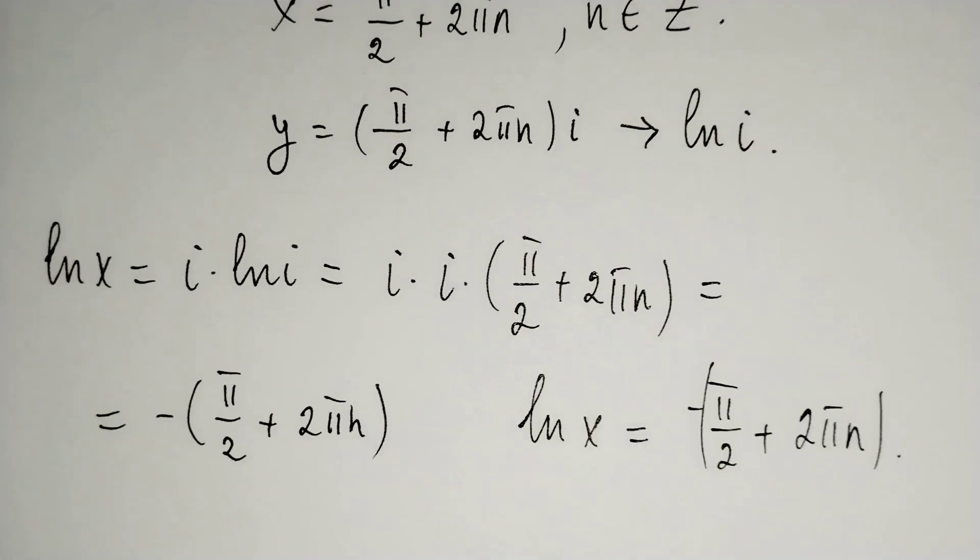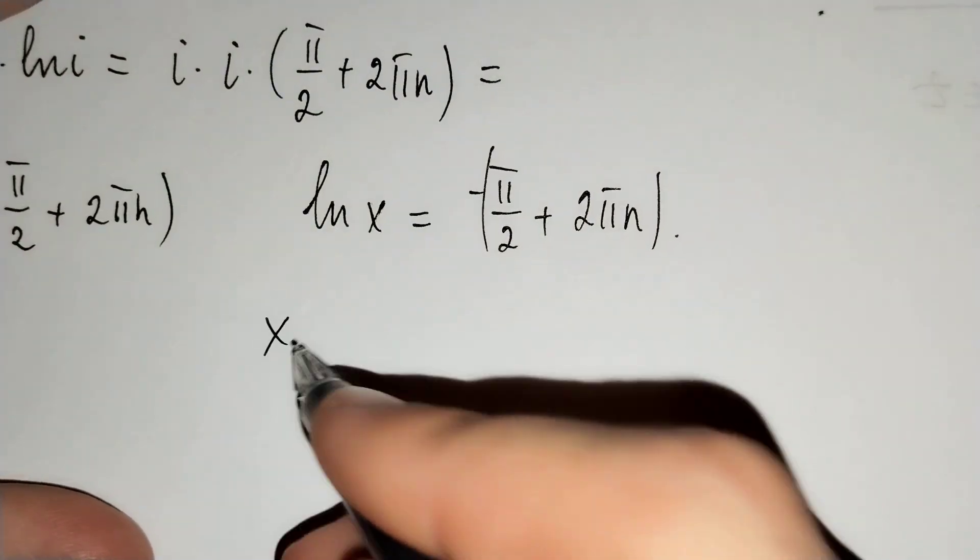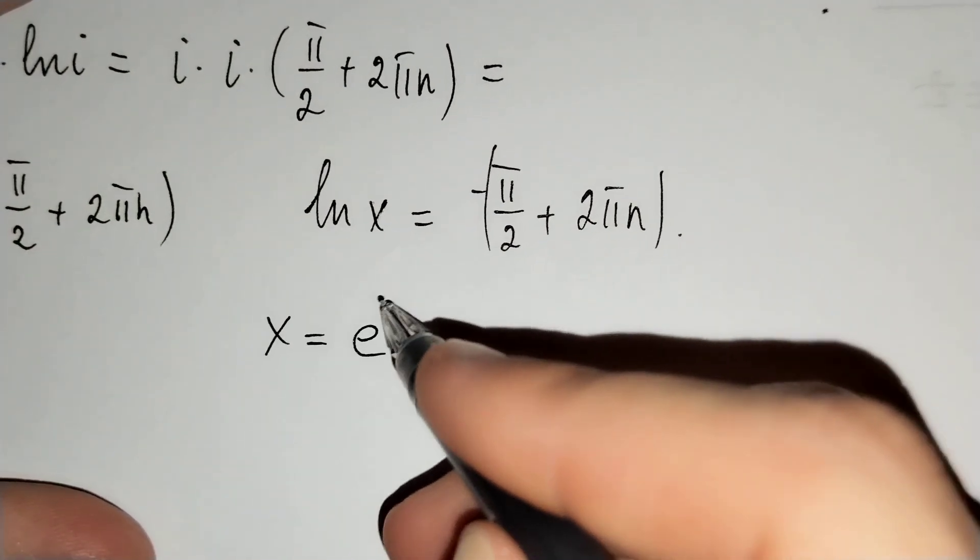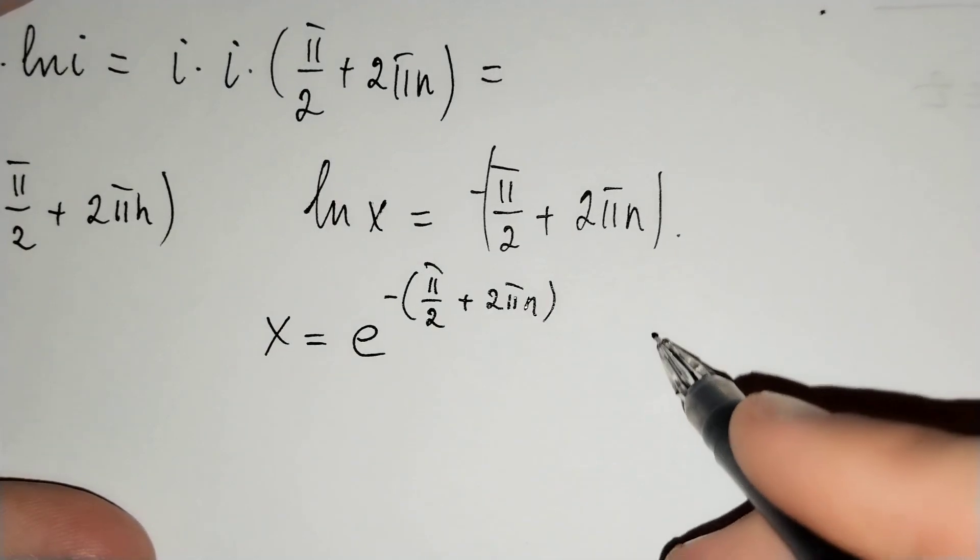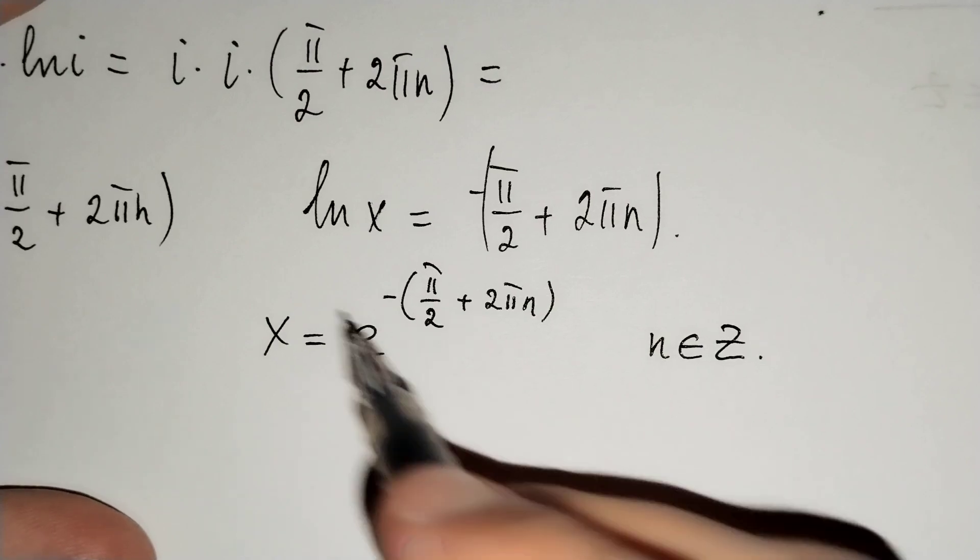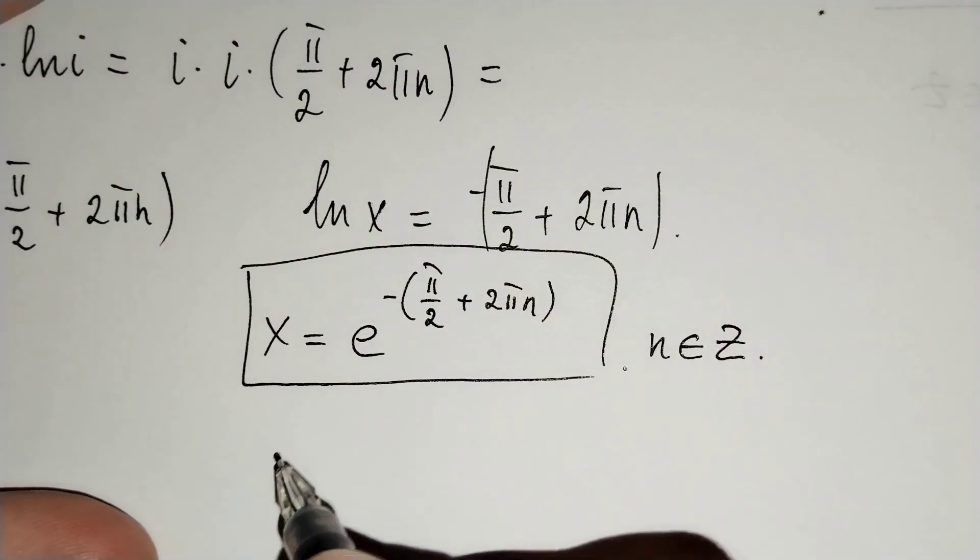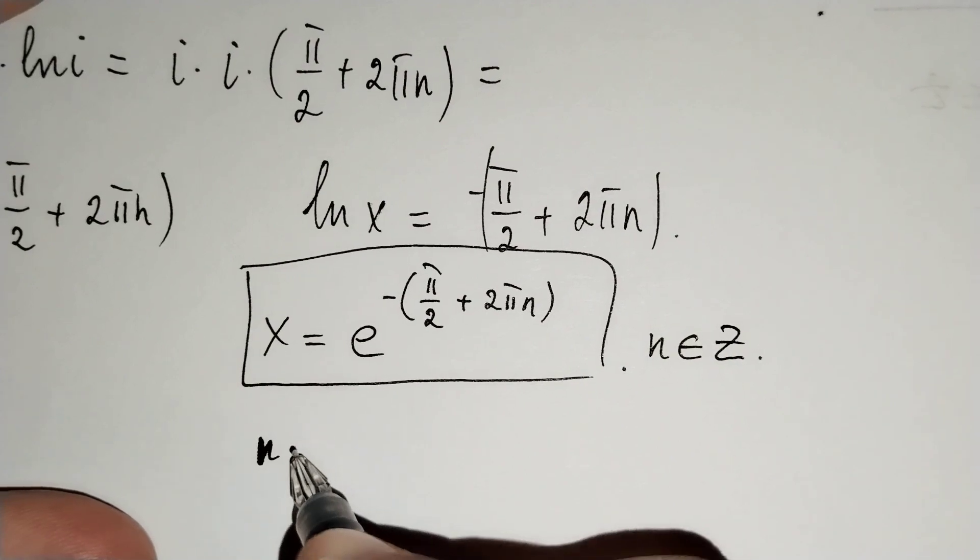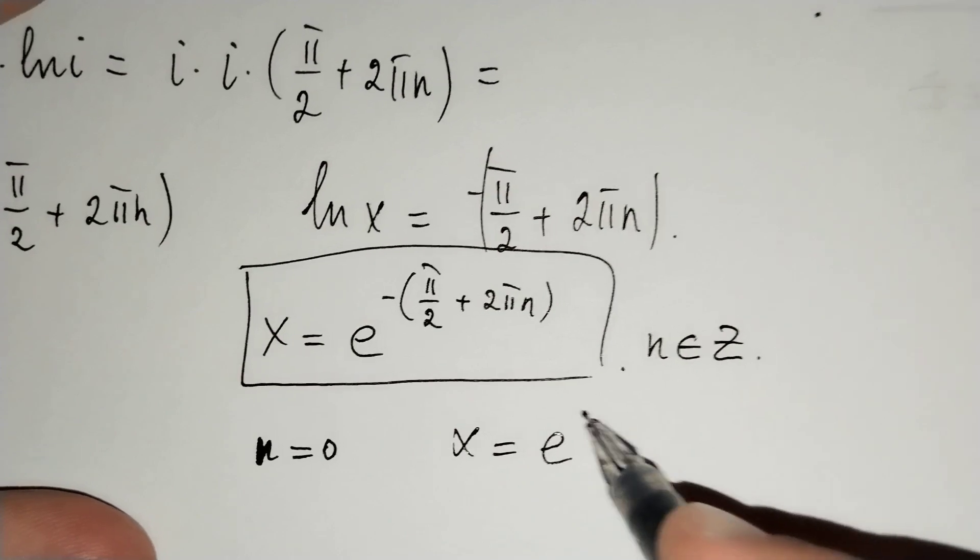If we find x from this equation, x equals e power (minus pi over 2 plus 2 pi n), where n belongs to integers. This is our x.